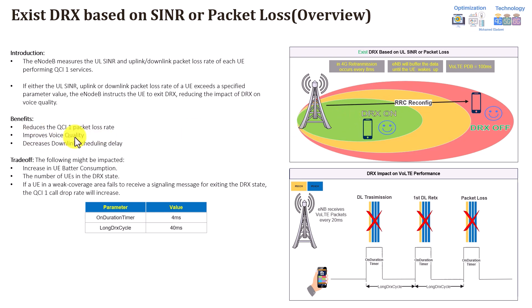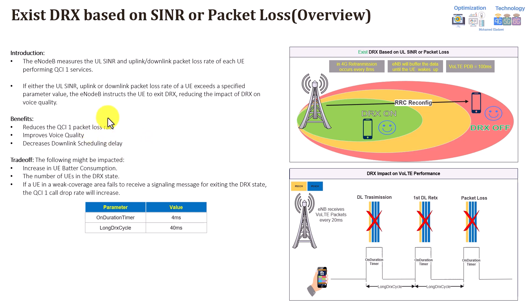The three main benefits we can obtain from disabling DRX are: reducing packet loss, improving voice quality, and improving downlink scheduling delay. To understand where these gains come from, let's recall the behavior of VoLTE DRX.